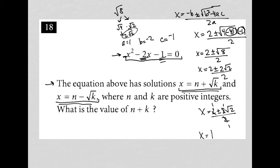We're left with x equals 1 plus or minus root 2. In this case, n is 1 and k is 2. The question asks for n plus k, so the answer is 3.